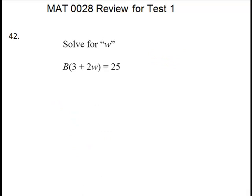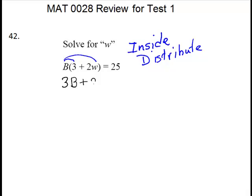Our next formula. We're going to solve for w. And this one has a parenthesis. Anytime you have a formula with a parenthesis, you have to stop and ask yourself, is the variable you want on the inside or the outside? If it is inside, you will distribute like normal. So w is inside, so we will go ahead and distribute to get it out of the parenthesis. So we'll distribute the b. So we're going to have 3b plus 2bw equals 25.